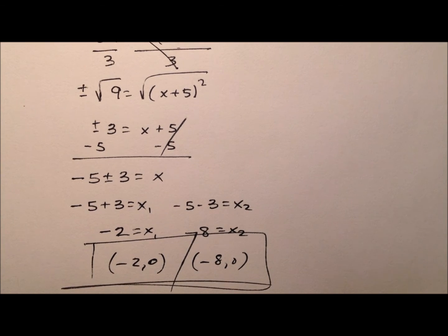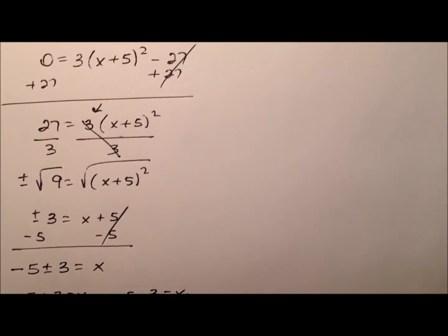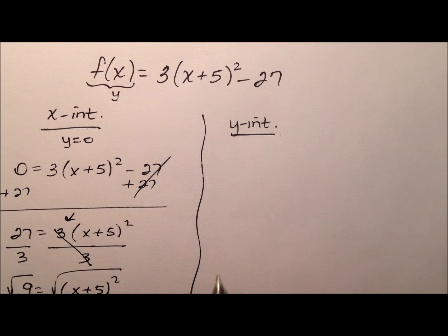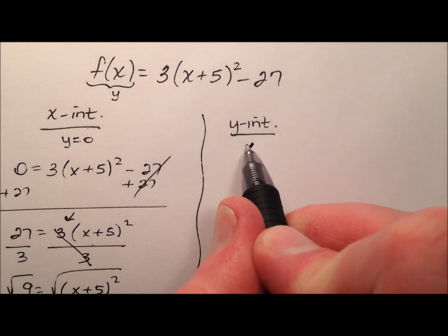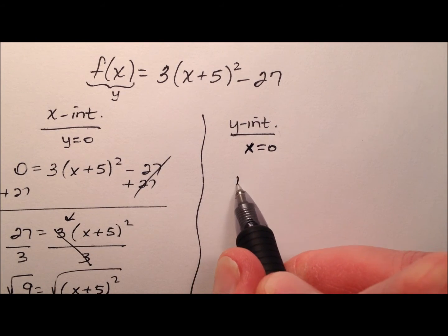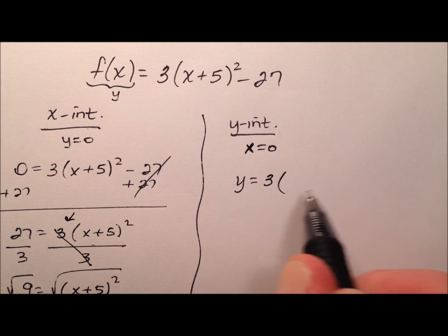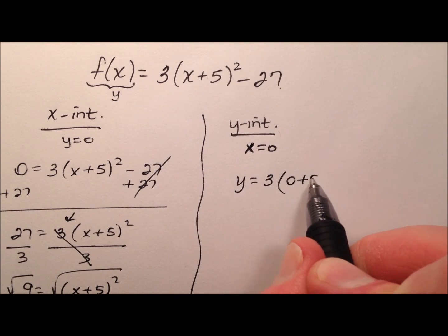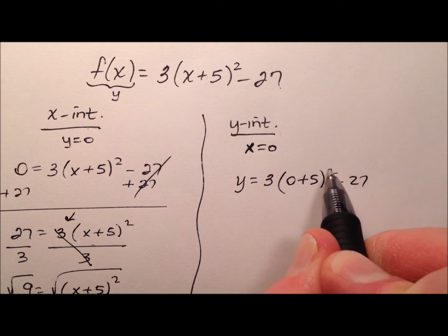So let's swing back up and see if we can also identify algebraically our y-intercepts. So remember we can do the y-intercepts by plugging in 0 for x and then solving. So y equals 3 times this quantity here, so it'll be (0 + 5)² - 27.